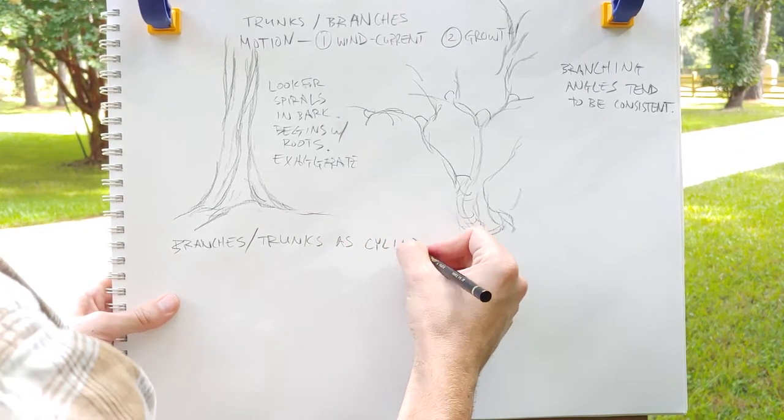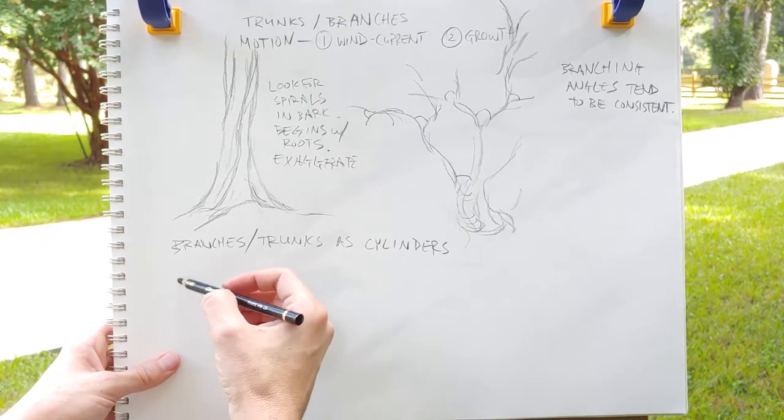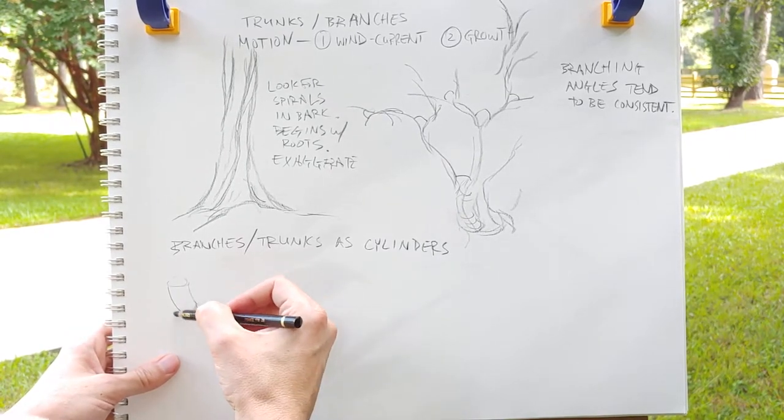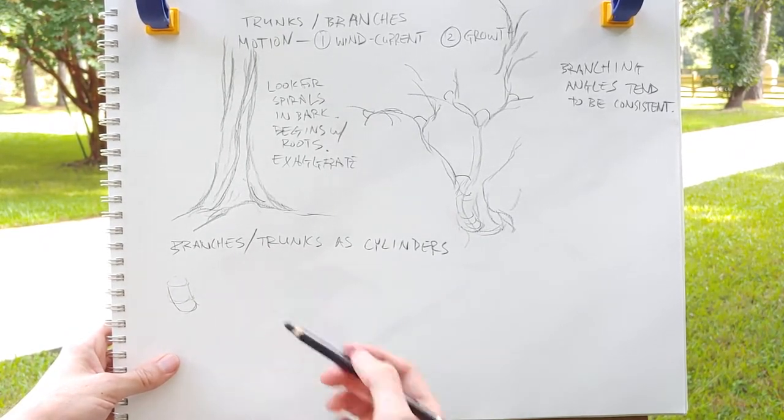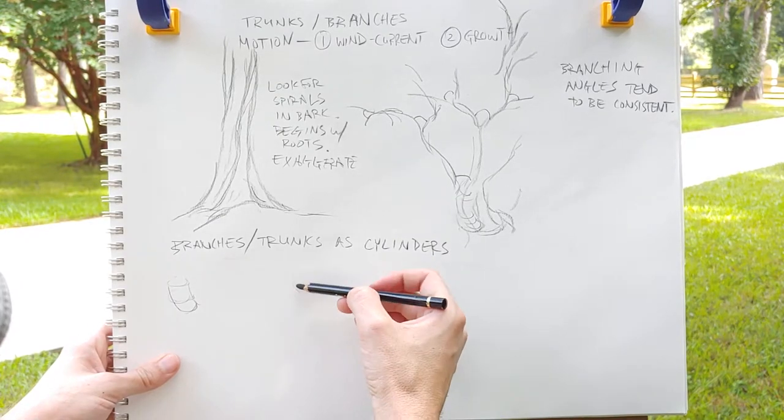And then when you're getting very specific, say you're up close to a tree or you want to do a study of a root system or a particular tree, you can treat the trunks and the branches as cylinders.